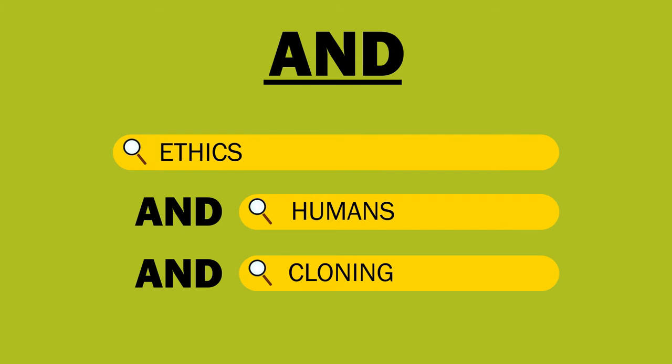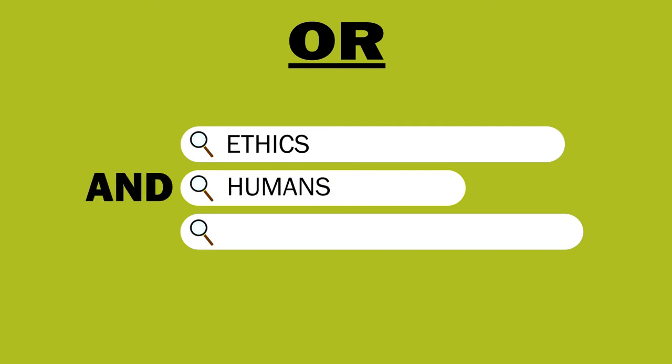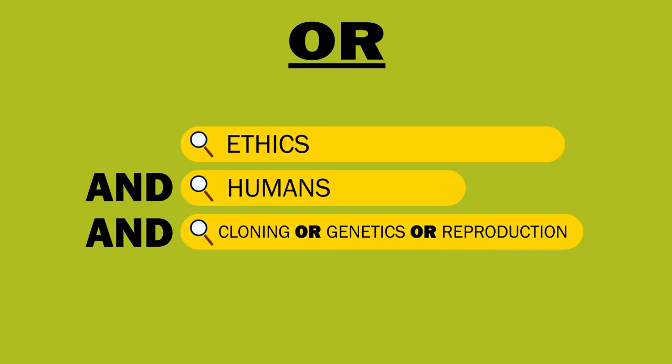What if one of the keywords could be referred to differently using a synonym? This is where OR may be helpful. OR allows you to broaden your search, as it lets the search engine know that you will accept any of the keywords connected by OR. Adding OR to our previous search might look like: ethics AND humans AND cloning OR genetics OR reproduction. This lets the search engine know we want results containing ethics and humans, and at least one of: cloning, genetics, or reproduction.